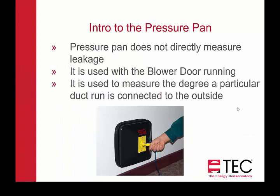An important thing to understand is that pressure pans do not measure leakage. What we're going to be talking about today is primarily using it to diagnose duct leakage, although it is often used to do zone pressure diagnostics. A better application: recessed lights are a typical thing that they're used for, to try to determine a pass/fail — but a pressure pan is not the right device for that. You could use an exhaust fan flow meter, for example, with a minimum rating of 10 CFM using the smallest opening.